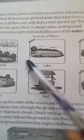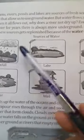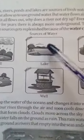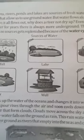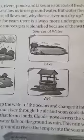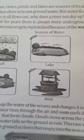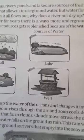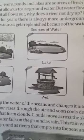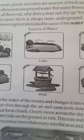Rainwater, rivers, ponds, lakes, and streams are sources of surface fresh water, whereas tubewells and wells are sources of groundwater.